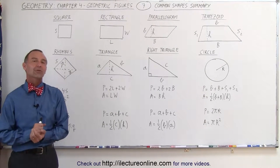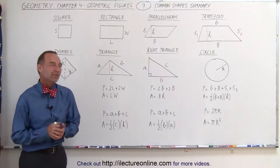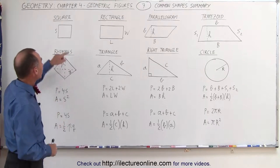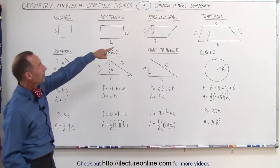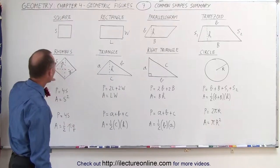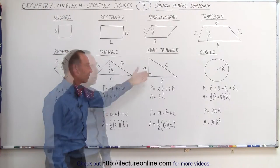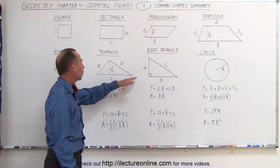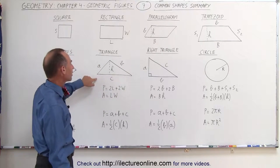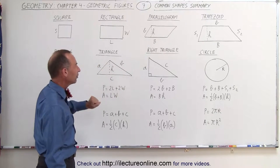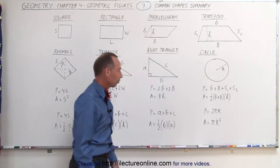Welcome to ElectroOnline. Now let's review some of the common shapes that we've seen so far. We've seen the square, the rectangle, the parallelogram, the trapezoid, the rhombus, the triangle, and I threw in the right triangle to see how that stacks up with a non-right triangle where the three sides are all different, and then we have the circle.